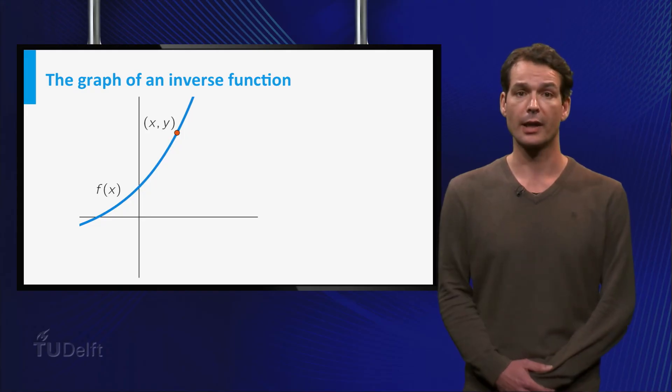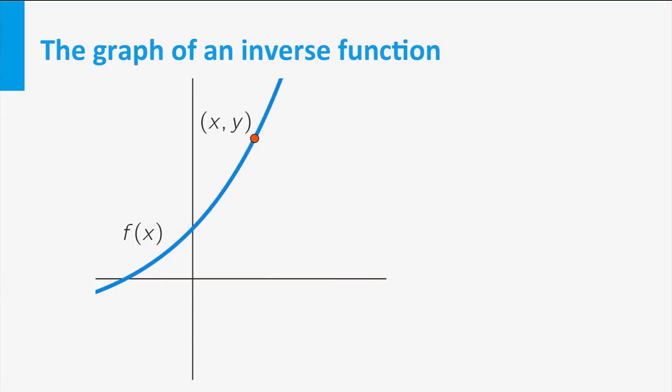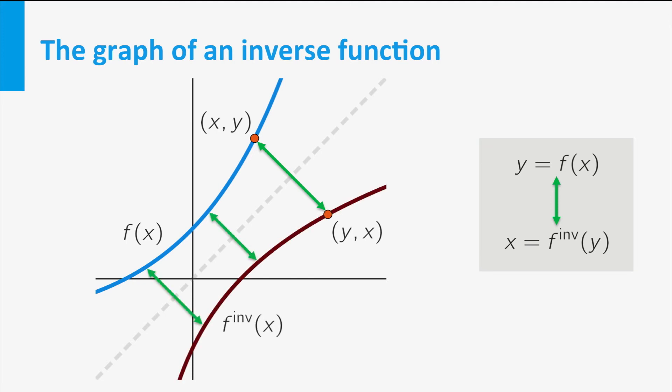Let us now look at the graph of an inverse function. Suppose that X, Y is a point on the graph of the function F, then Y equals F of X. Since X equals F inverse of Y, we find by interchanging X and Y that Y, X is a point on the graph of F inverse. So the graph of F inverse can be obtained from the graph of F by interchanging the X and the Y coordinates, which is the same as reflecting the graph of F in the line Y equals X.